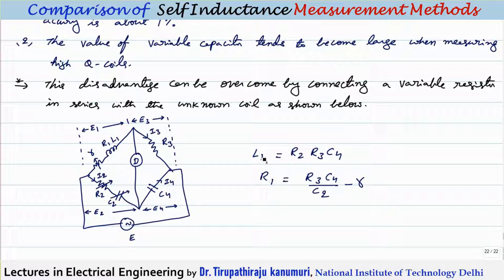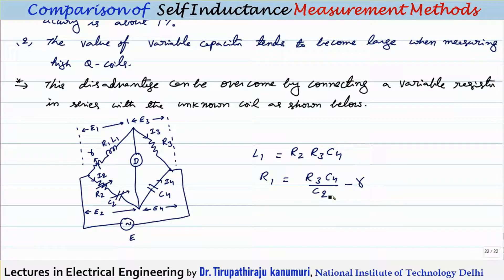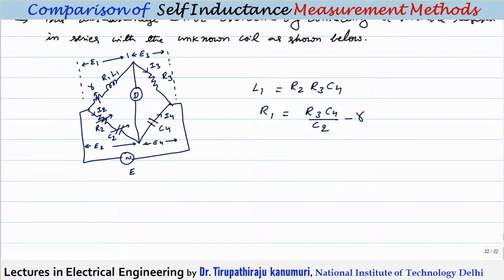For higher Q, the coil resistance decreases. By increasing the inserted resistance R, balance can be obtained easily without varying C2. Only R2 and R are varied while C2 is kept nearly constant, overcoming the disadvantage of needing a large variable capacitor.